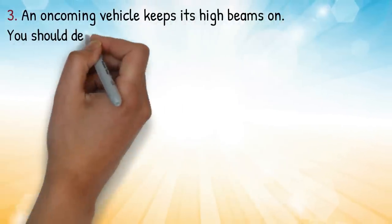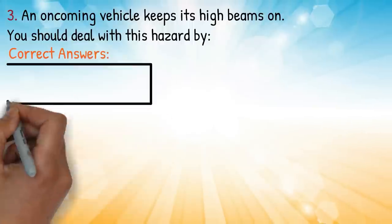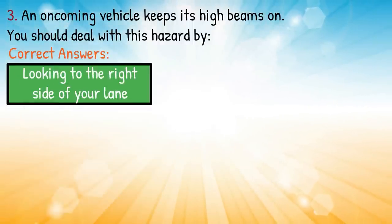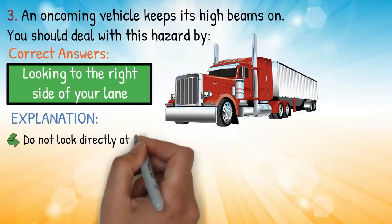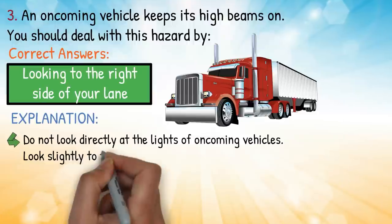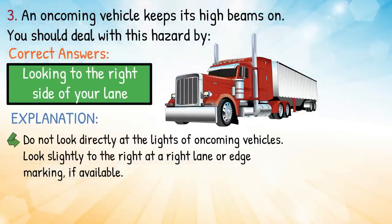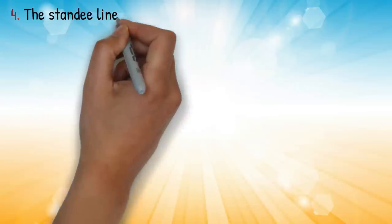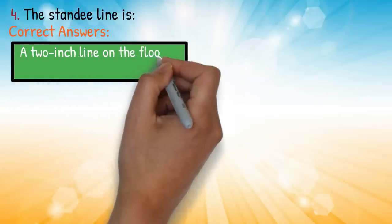Explanation: passengers should be moved at least 100 feet away from the bus. Question three: an oncoming vehicle keeps its high beams on — you should deal with this hazard by — correct answer: looking to the right side of your lane. Explanation: do not look directly at the lights of oncoming vehicles; look slightly to the right at a right lane or edge marking if available.